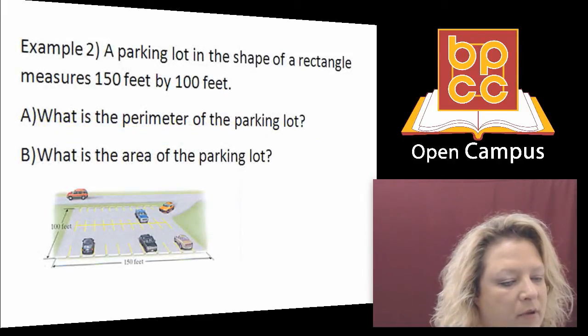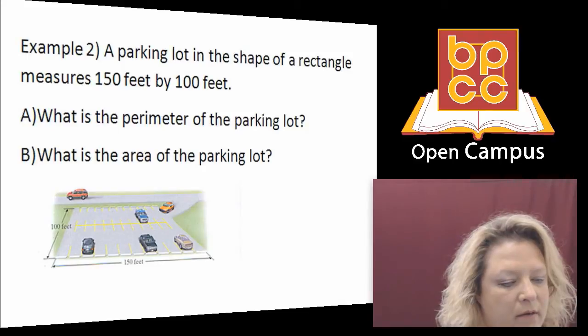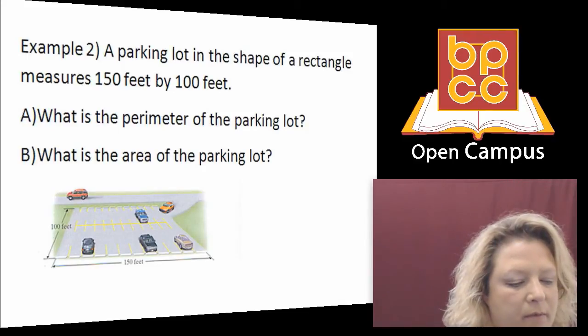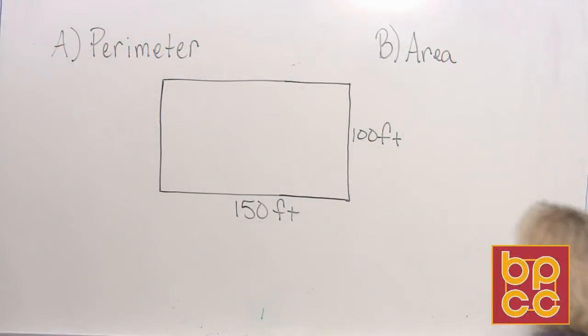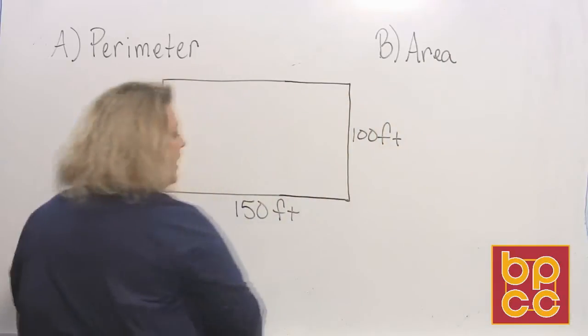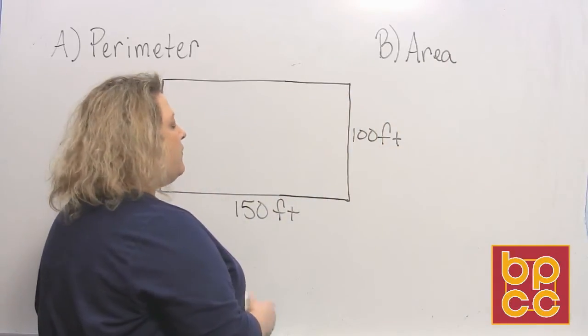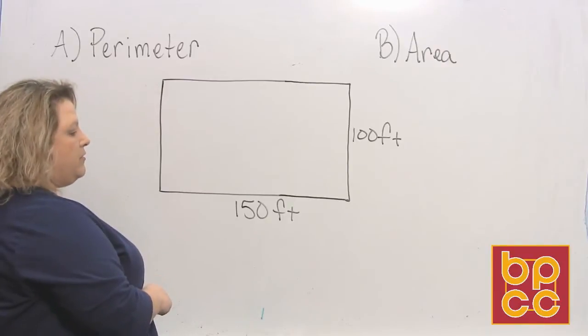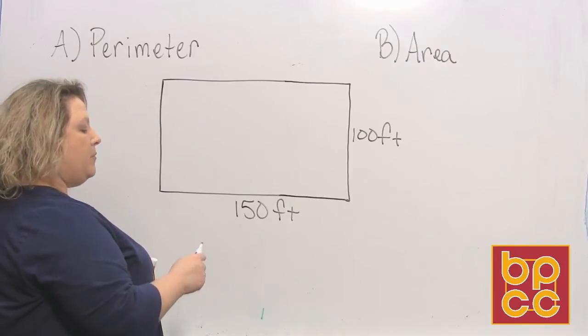Now I'm going to work a problem on the board, which is this one right here. So let me change to the whiteboard. And it asks us to do two things. First it asks us to find the perimeter. Well in order to do that, you have to remember what the word perimeter means.